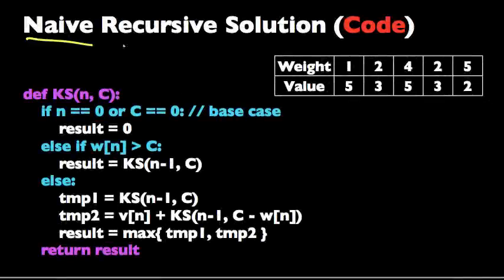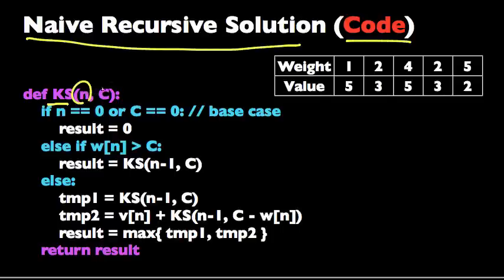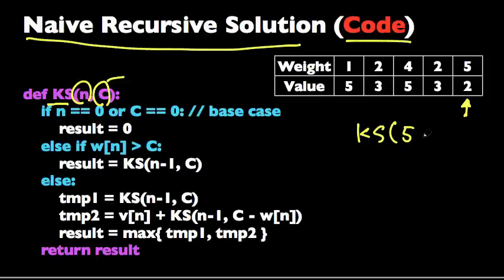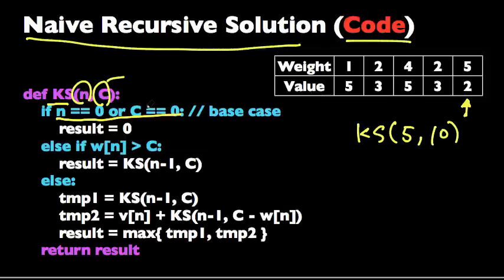Here's how our recursive solution works in code. We define a function ks_knapsack that takes two variables: the first is the position of the pointer — the number of items we have left to consider — and the second is the amount of capacity we have left. The first call for this example is ks(5, 10) because we have 5 items left to consider and 10 kilograms of capacity. The base case is: if n equals 0 or c equals 0, we return 0. From this function we're returning the optimal value achievable with that pair of variables, not the list of items itself — so if you want that, you'll need to change the code a bit.